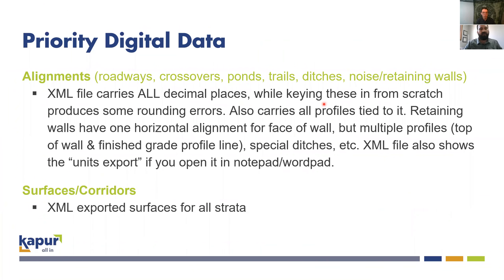The priority digital data for us is alignments and surfaces. The XML file carries all decimal places, whereas keying them in from scratch will produce some rounding errors of a hundredth or two — not earth-shattering, but we always want to be as accurate as we can. As a surveyor I'm always trying to track the amount of error I could be introducing. The entire job is displayed and built using stations and offsets, so these XML files of alignments, roadways, crossovers, ponds, trails, and retaining walls are so valuable — and they also carry all their profile information with them. We could key in additional profiles if needed.